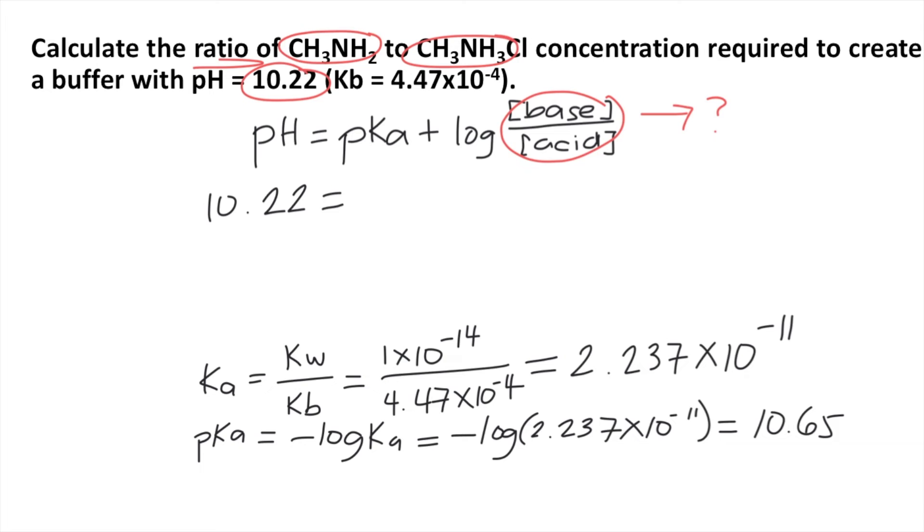So we will plug this now into our equation. Our pKa is 10.65 plus the log of base over acid. Next, you will transfer 10.65 to the other side and it becomes negative. So 10.22 minus 10.65, that's equal to the log of the ratio of base over acid. I'll just write it as B over A.